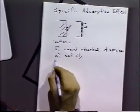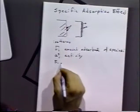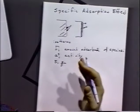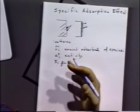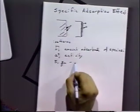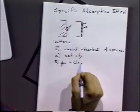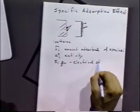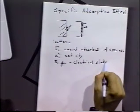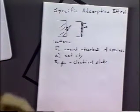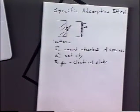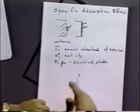We also consider the so-called electrical state — what's the potential of the electrode, or the charge on that metal electrode. So we want to know how much is adsorbed depending on how much stuff we have in solution and the potential or charge on the electrode.